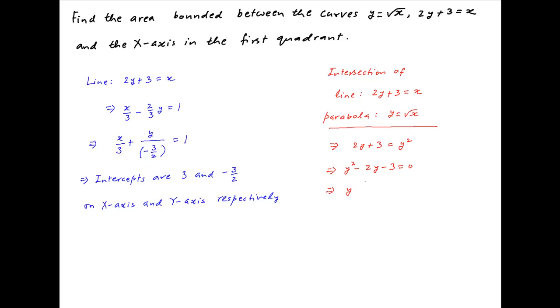Solving this quadratic for y, we get 2 plus minus square root of 4 plus 12 divided by 2. This is equal to 2 plus minus 4 divided by 2. Therefore, the possible values of y are 3 and minus 1.